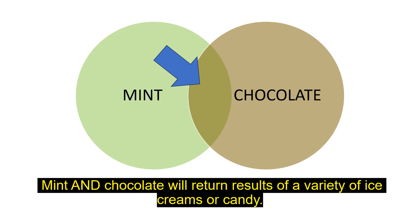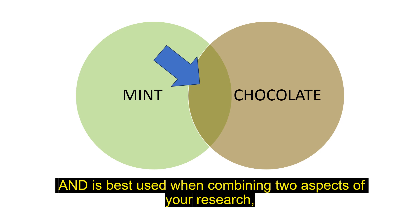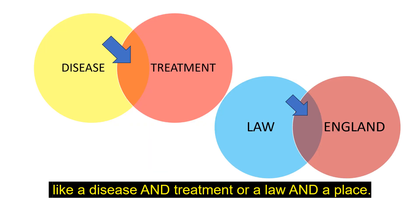Mint AND chocolate will return results of a variety of ice creams or candies. AND is best used when combining two aspects of your research, like a disease and treatment, or a law and a place.